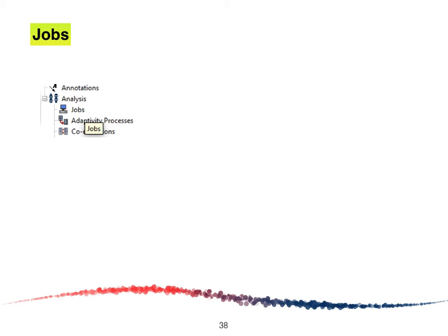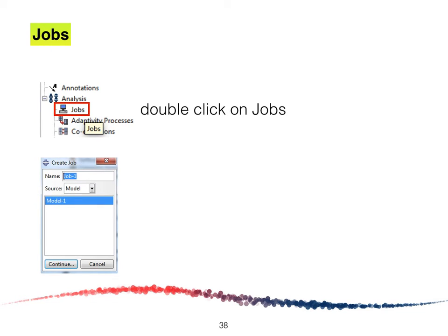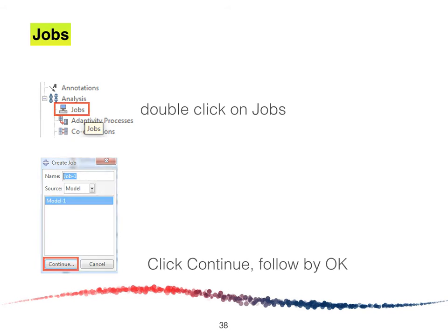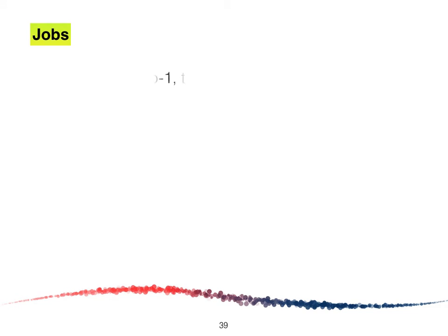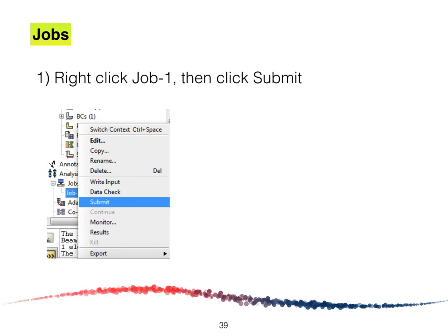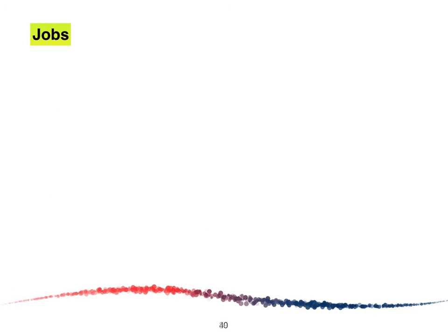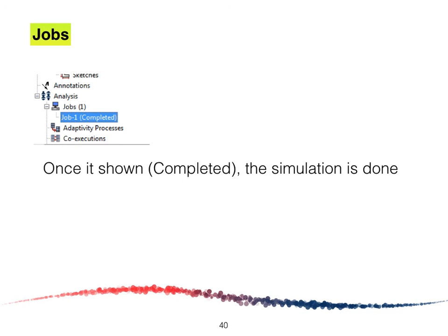After completing the meshing, create the job by double-clicking on Jobs. The Create Jobs window will appear — click Continue followed by OK. Next, right-click on Job-1, click Submit, followed by OK. The simulation will take a while to run; after it is completed, it will show on your screen.